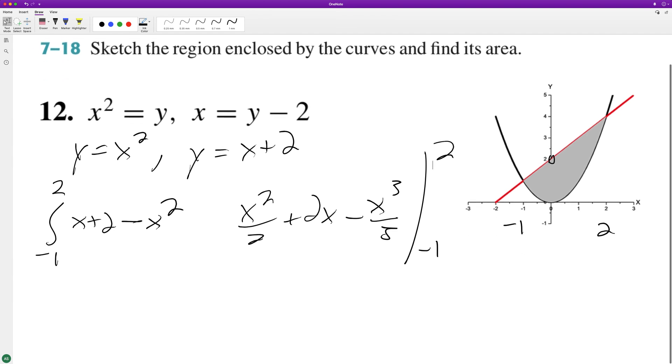So what happens here is we get 4 over 2 plus 4 minus 8 over 3, minus 1 half minus 2 plus 1 over 3.